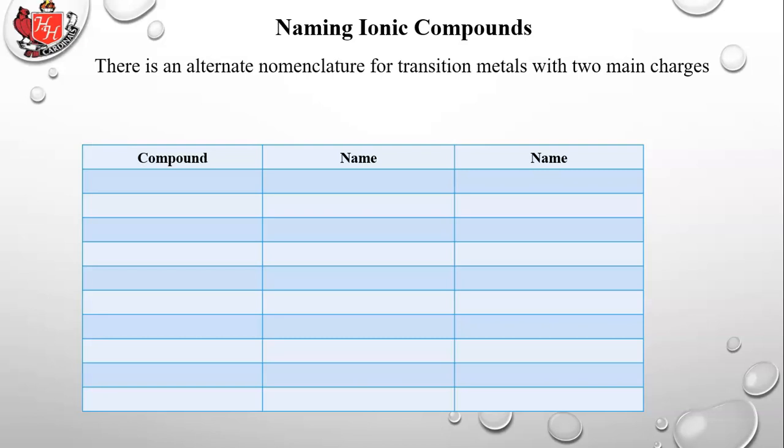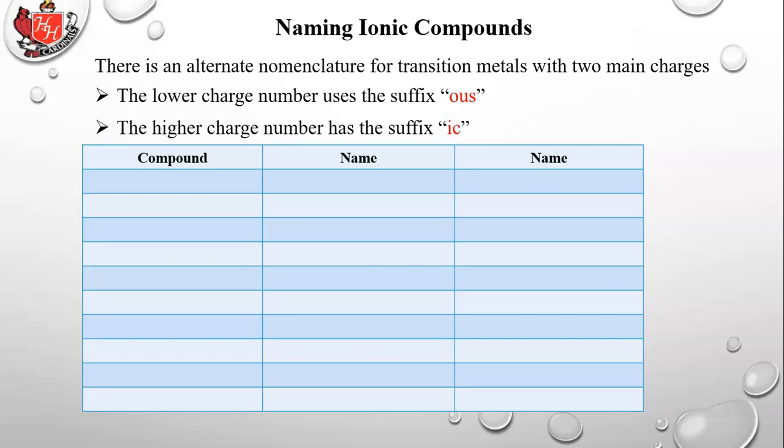There is an alternate nomenclature for transition metals with two main charges. The lower charge number uses the suffix ous, and the higher charge number uses the suffix ic. This is rarely used anymore, but you will still see it, and so you should be aware what it means. FeO, iron(II) oxide, that's the lower of the two numbers, so that's ferrous oxide.